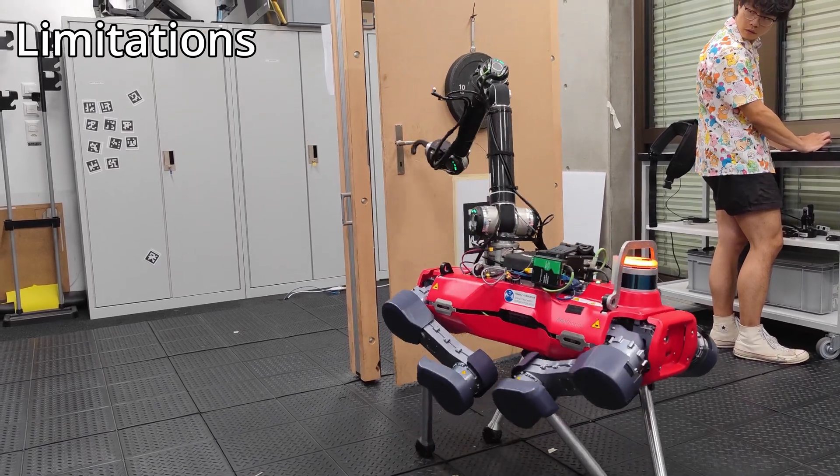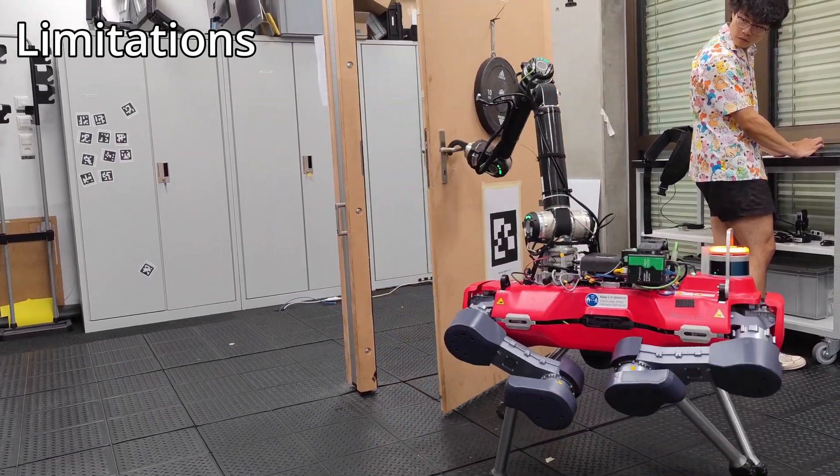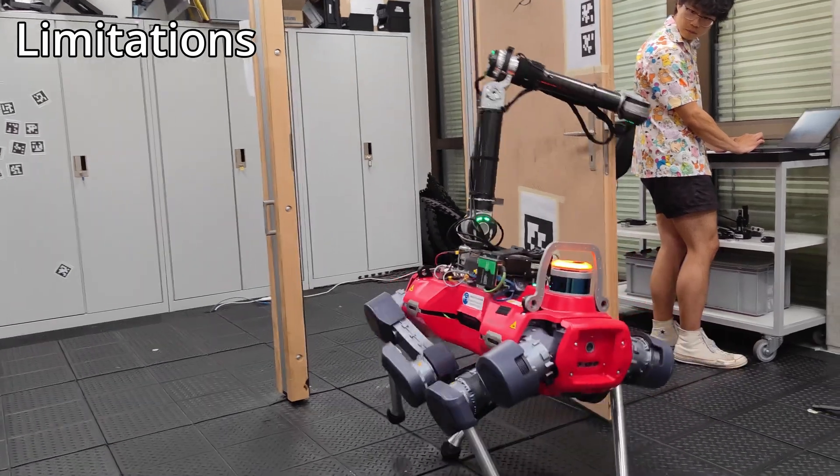In another failure, inaccuracies in the robot's contact model and simulation resulted in the end effector getting stuck on the door panel.